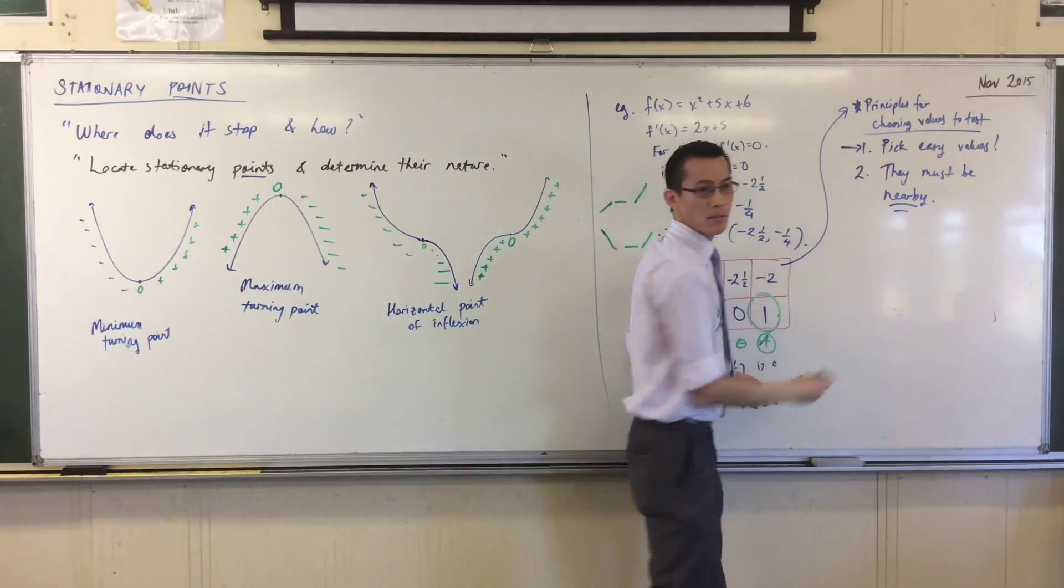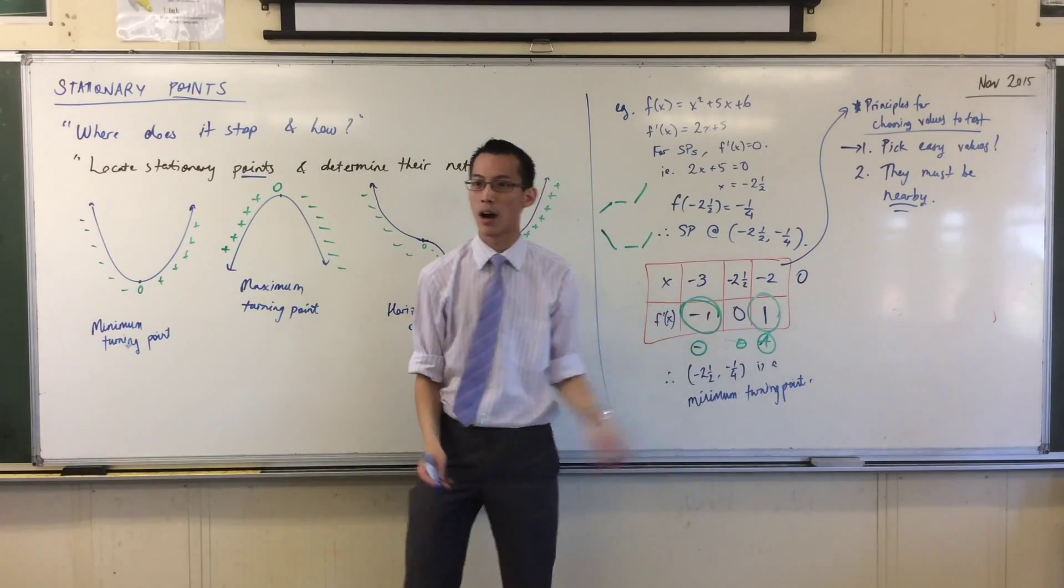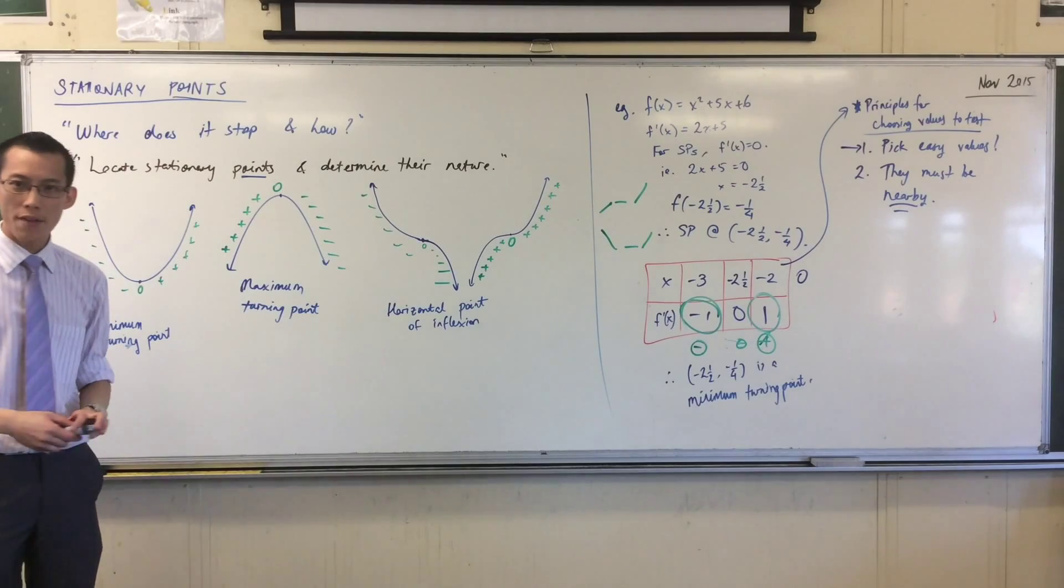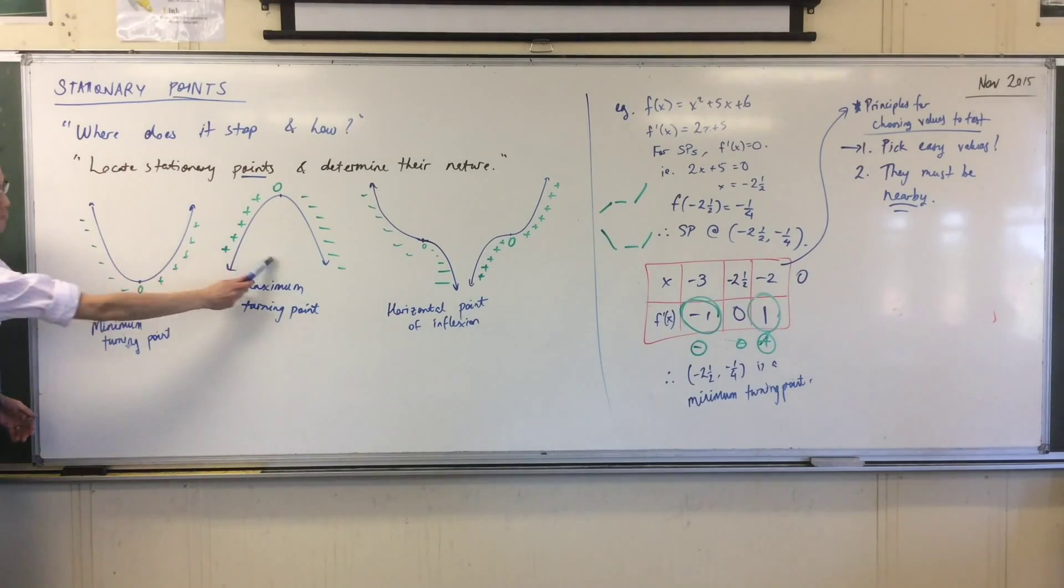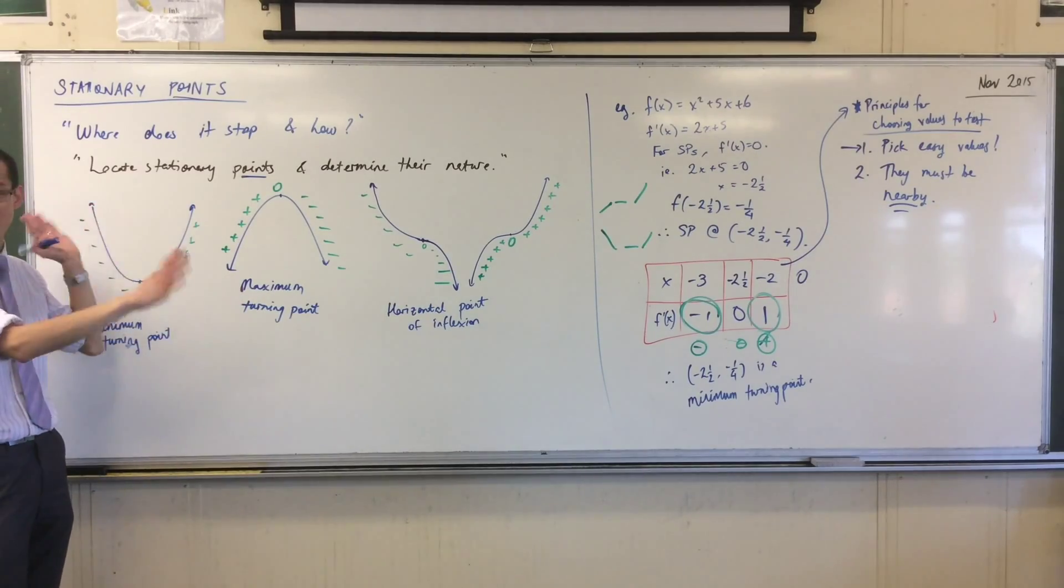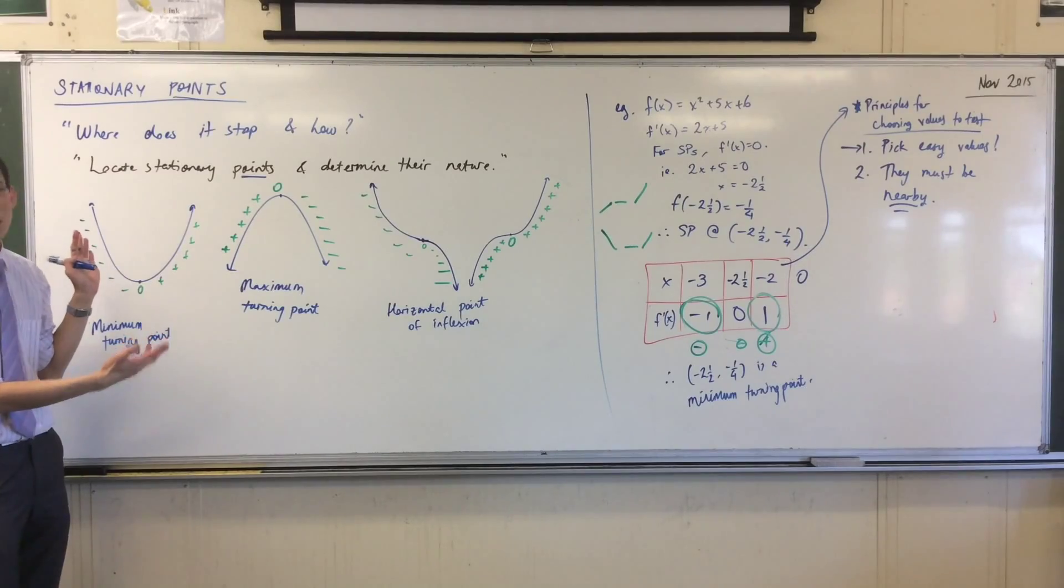So really, then, you just pick something easy. I could have put zero. That's to the right of negative two and a half. Does that make sense? And that's a really easy value to test. However, here is why you need to pick nearby.